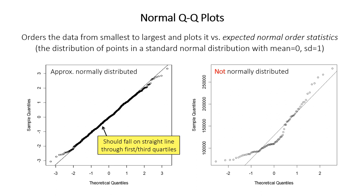They have the actual data on the y-axis, with the values put in order from the smallest one to the largest one. The x-axis shows the quantiles for something called the expected normal order statistics. Basically, what are the expected points you would have from a normal distribution with the same sample size, but with a mean of zero and a standard deviation of one?